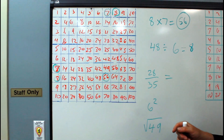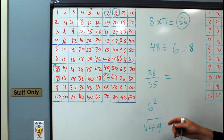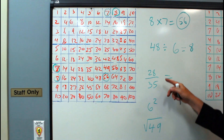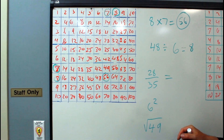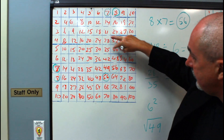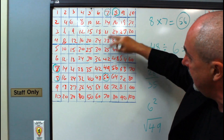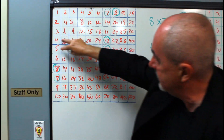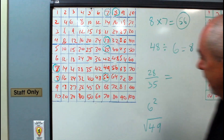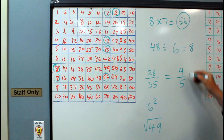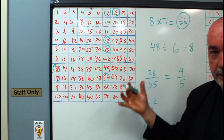You can use this grid to put fractions into lowest terms. For 28 over 35, find 28 and find 35 in the grid, then move straight across and you'll find 4 over 5 — so four-fifths is the lowest terms. It works with some fractions.